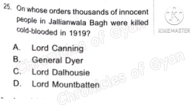Question 25: On whose orders were thousands of innocent people in Jallianwala Bagh killed in cold blood in 1919? The correct answer is Option B, General Dyer.